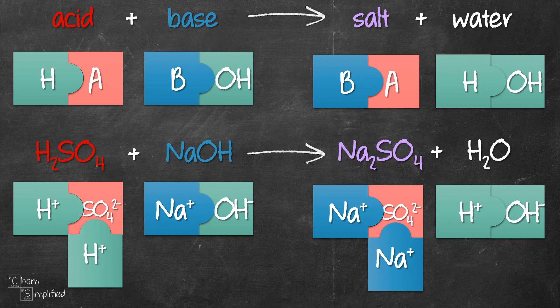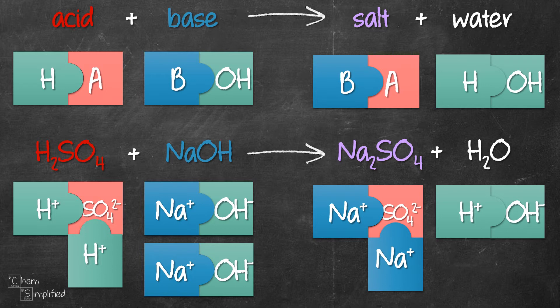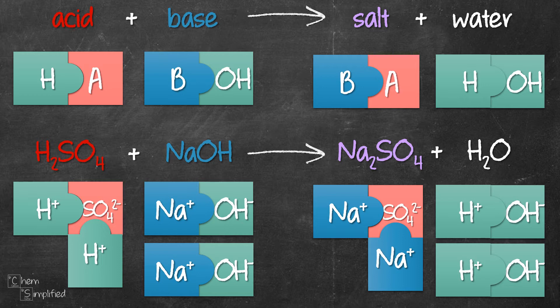Since we needed 2 Na+, that means we need 2 NaOH and in order to balance the equation, as a result, we will produce 2 H2O. Therefore, our balanced neutralization equation will be H2SO4 plus 2 NaOH giving us Na2SO4 plus 2 H2O.